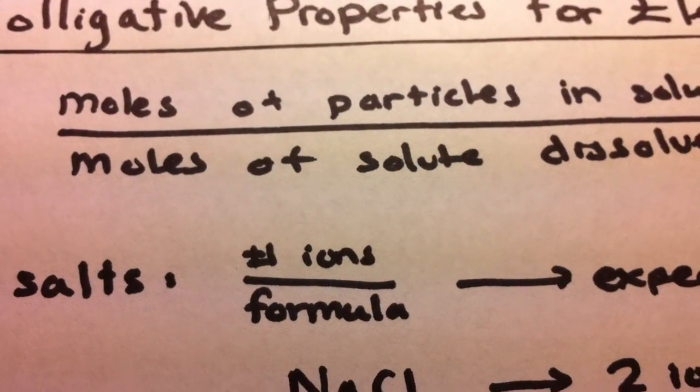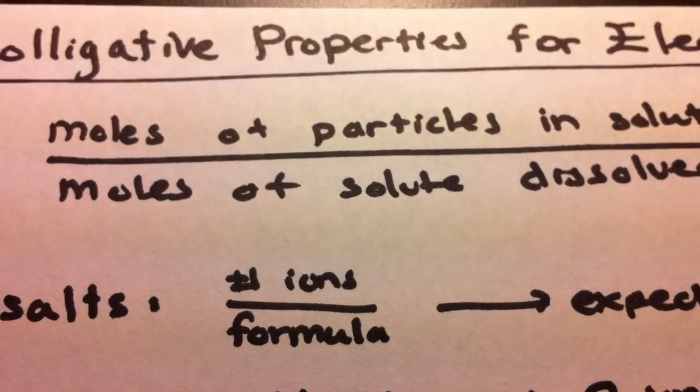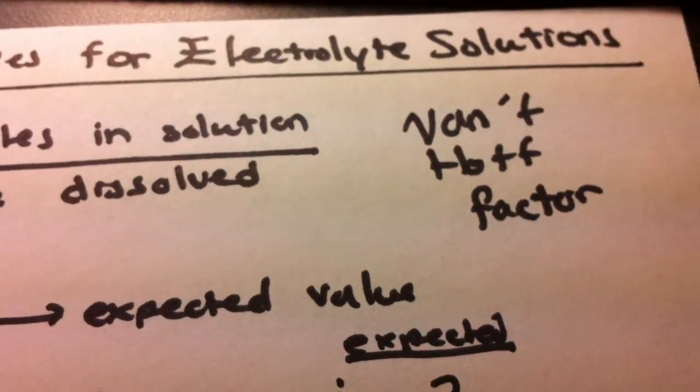For salts, this process is simplified by having the number of ions over the formula unit. This will result in the expected value for i.